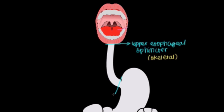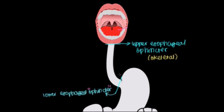Down here, we have the lower esophageal sphincter. This is a little tricky because we call it a sphincter — it smells like a sphincter, looks like a sphincter — but it doesn't actually work like a sphincter. So it's sort of a scientific joke if you'd like to call it that. Because we don't have a ring of muscle that sits here that opens and closes whenever our body deems it appropriate.